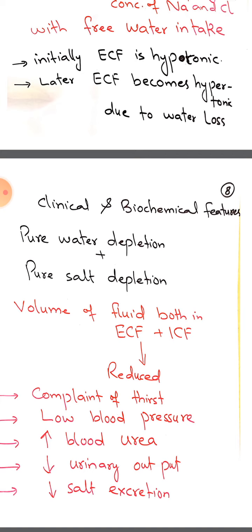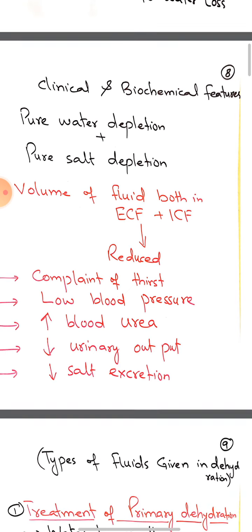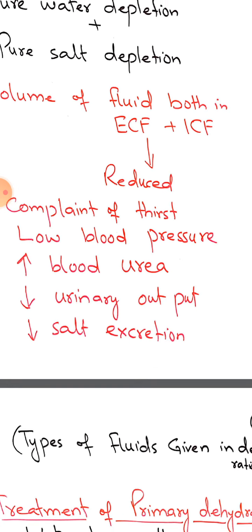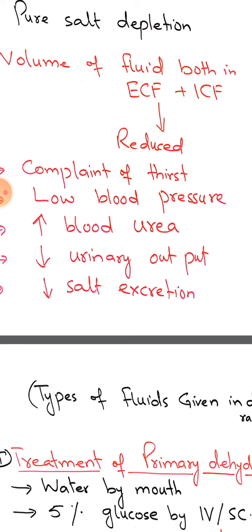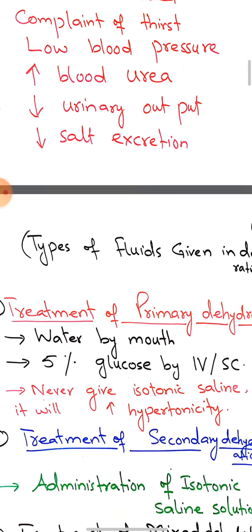Clinical and biochemical features of mixed dehydration include pure water and salt depletion. Thirst, low blood pressure, high blood urea, decreased urinary output, and decreased salt excretion will be observed. Thirst is due to intracellular dehydration; low blood pressure is due to reduced blood volume; high blood urea is due to less plasma volume and reduced urine excretion.